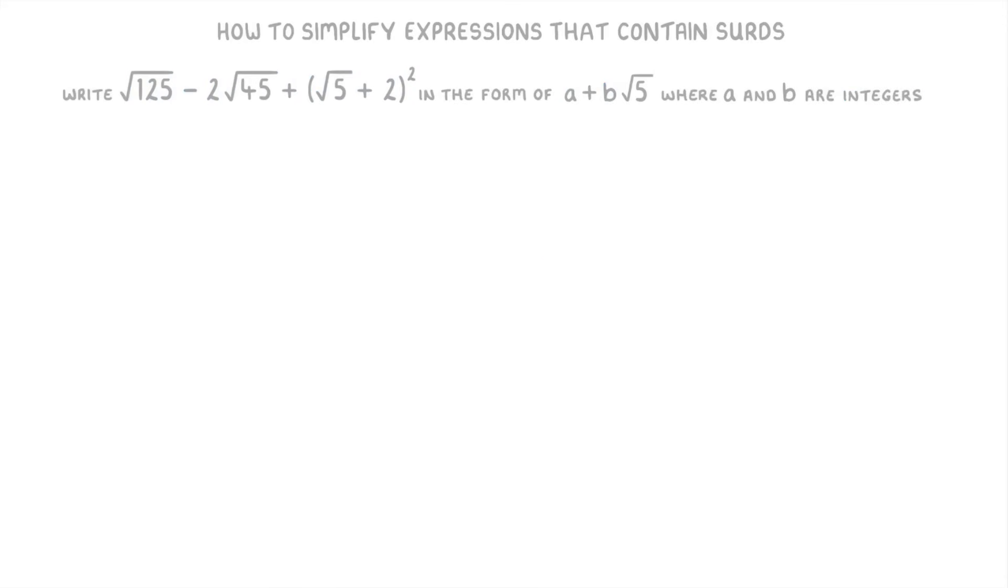To do this we're first of all going to have to simplify each of these terms, and then we'll need to add them all together. Let's start with the square root of 125.